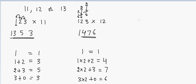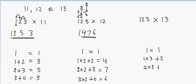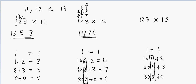Now let's multiply by 13 — again using 1, 2, 3. The first digit stays the same. The second is 1 times 3 plus 2, the third is 2 times 3 plus 3, and the last is 3 times 3 plus 0. I'm multiplying all the numbers by 3 and adding the next digit. So the answer is 1, 5, 9, 9.